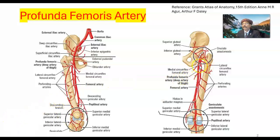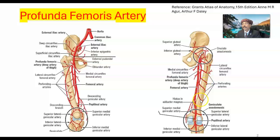Here in the posterior aspect, you can see the femoral artery, this is the profunda femoris artery — the deep artery of the thigh — and it has four perforating branches. This is the terminal continuation of the profunda femoris artery.